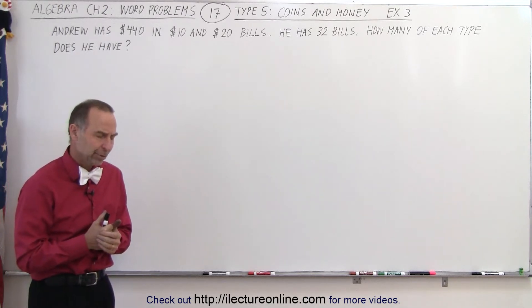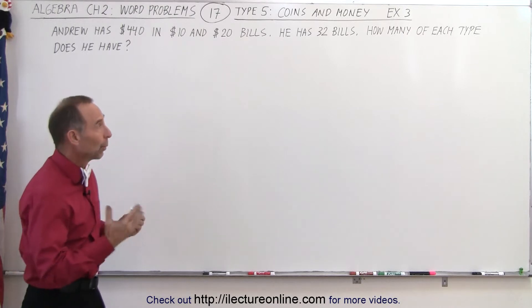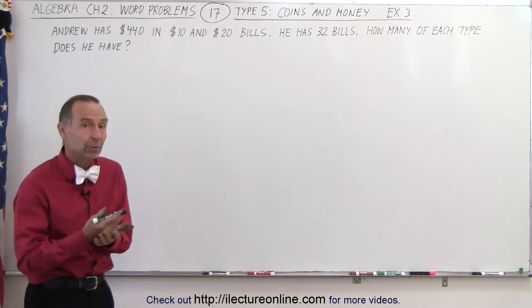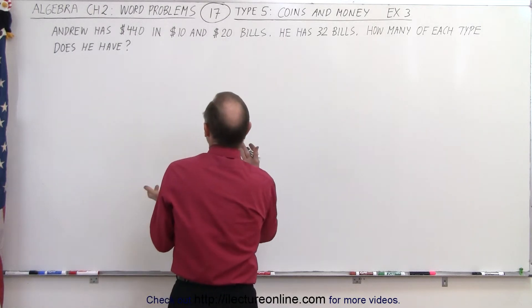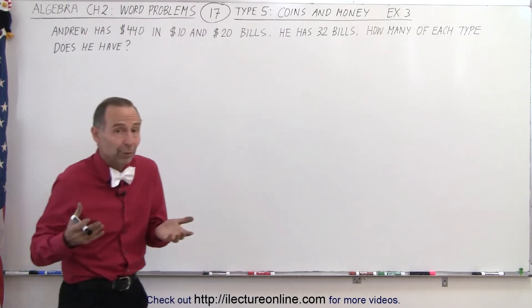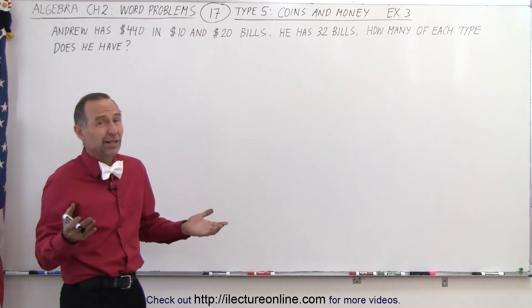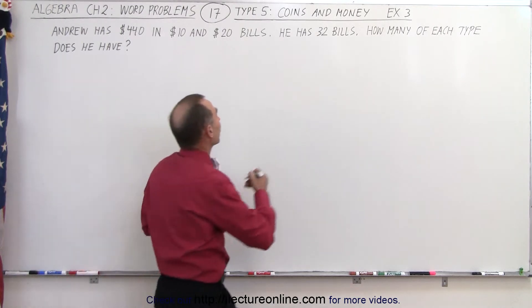How do we do that? Well, kind of the same way as before. We want to start out by letting x equal the number of the fewest bills that we have. But in this case, we don't know what that is. We don't know if we have fewer $10 bills or $20 bills, so it doesn't really matter. We just pick either one of them.